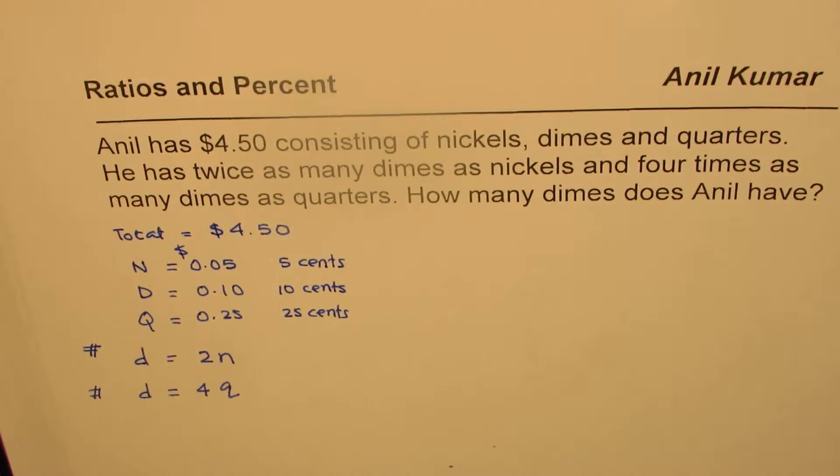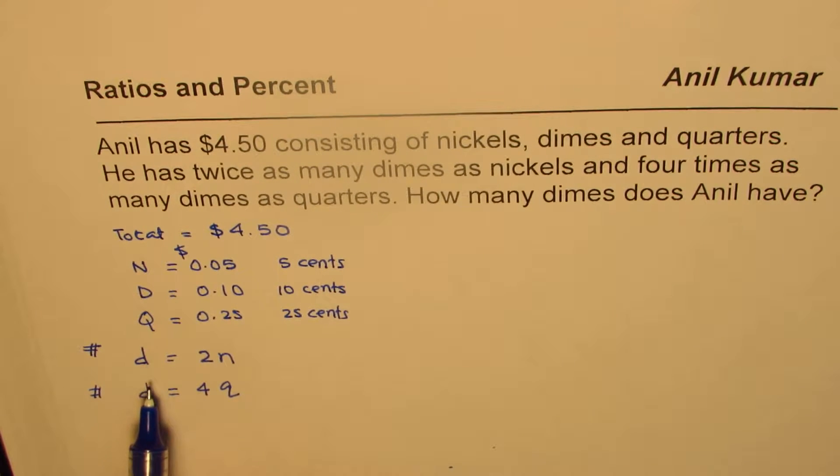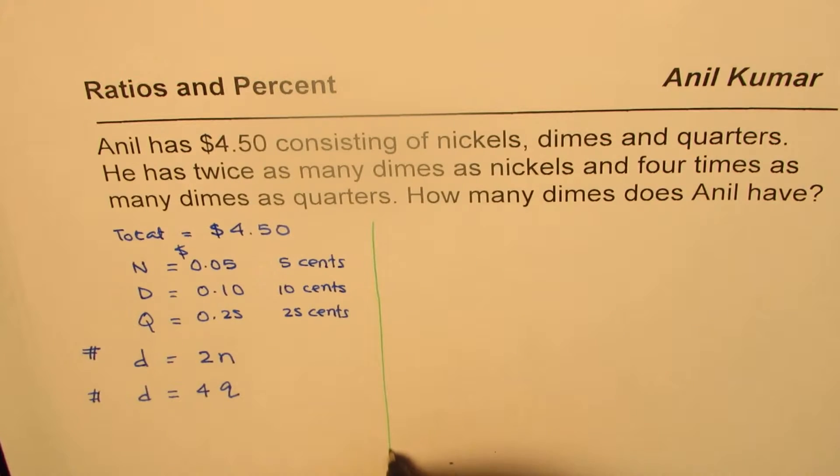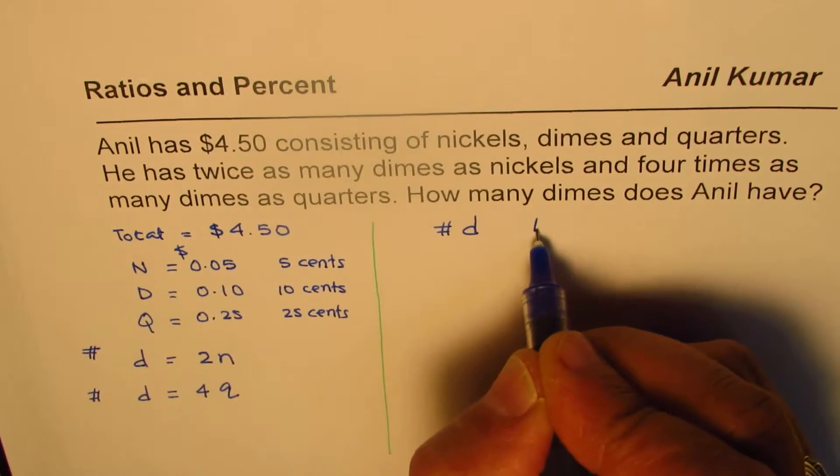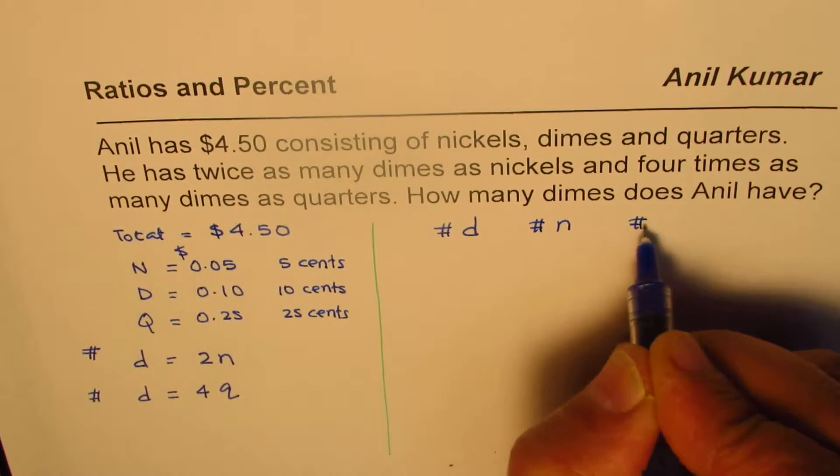Now we could do it in many ways. One way is ratios. Let's do it in the way of ratios. So can we find ratio of dimes, nickels and quarters? Think about it. So dimes is D, which is 2 times nickels and 4 times quarters. So let me write it on the right side and then I'll explain you how we can get different kinds of equations. So what we have here is number of dimes, number of nickels and number of quarters.